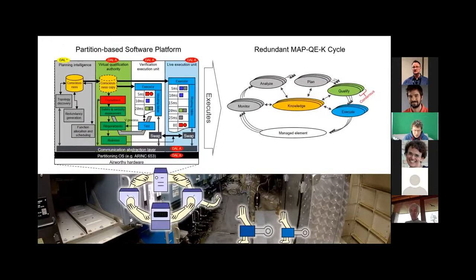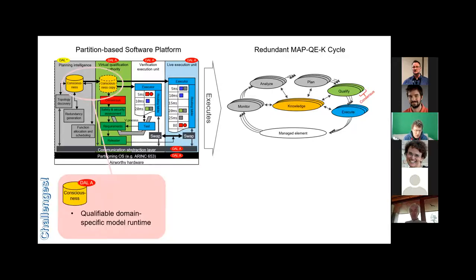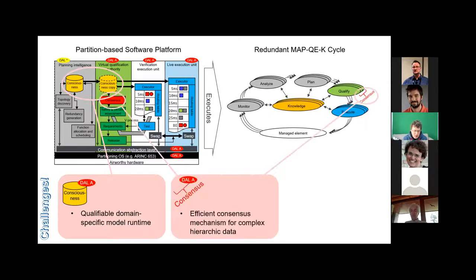We have partially implemented parts of that, but several challenges remain and we don't want to be the only ones working on them. One challenge is that the knowledge needed to manage the system must also be part of qualified software — we envision storing it in a domain-specific model, but we have no qualifiable implementation of that yet. Another challenge is achieving consensus on this complex hierarchical data; consensus algorithms work well on primitive values but may be inefficient or infeasible on complex models.